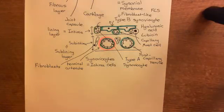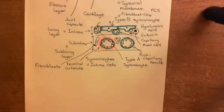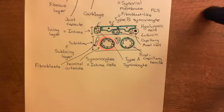So this is the healthy structure of a synovial joint and the synovial membrane. Now what we're going to do is begin to discuss the pathology of rheumatoid arthritis, and we will begin that discussion in the next video.